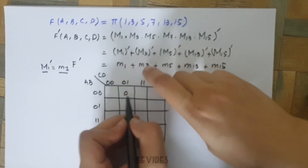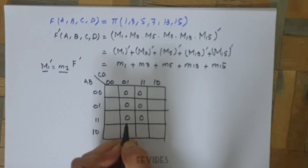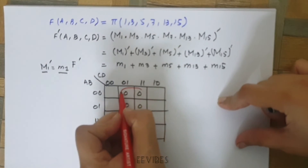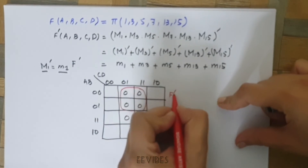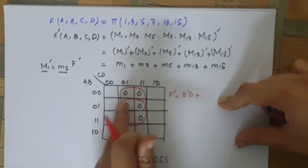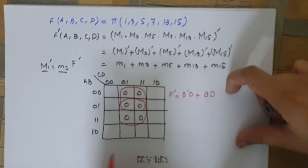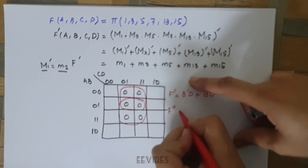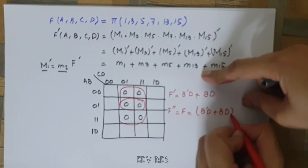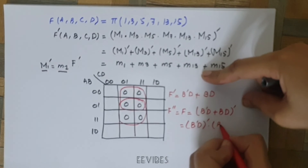Placing zeros at the corresponding positions in the K-map. Simplifying this expression, the F complement equals b'd (combining four consecutive zeros) plus bd. Since it's the complemented form of the function, I will again take its complement to retrieve the original function, giving (b'd + bd) complement.